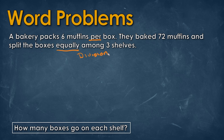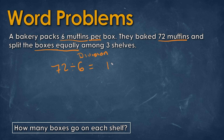Reading the question, it says the bakery packed six muffins per box. They baked a total of 72 muffins and split the boxes equally between three shelves. First, we need to figure out how many boxes there are by taking 72 muffins with six muffins per box. If we divide that, we get an answer of 12 boxes.